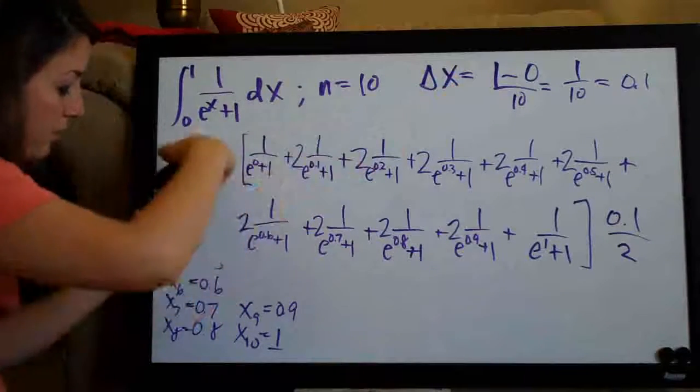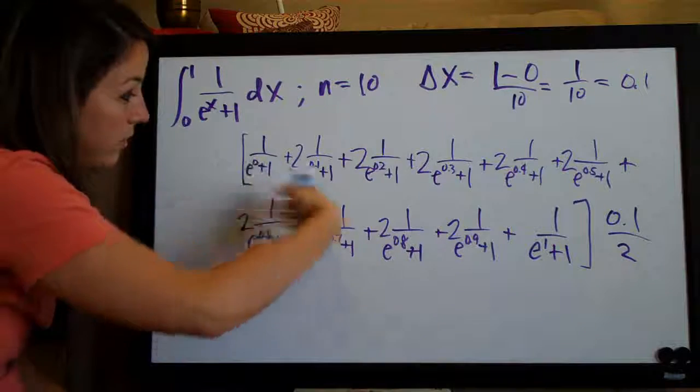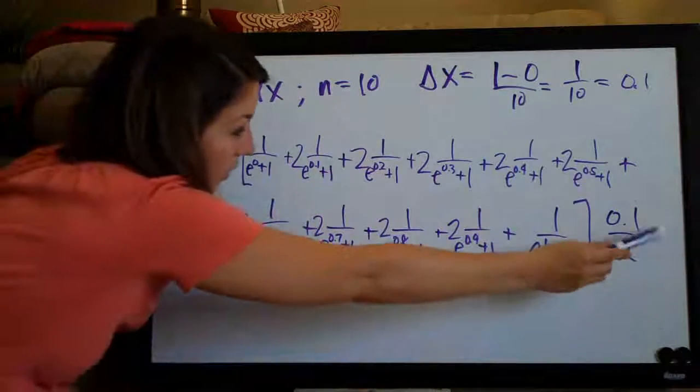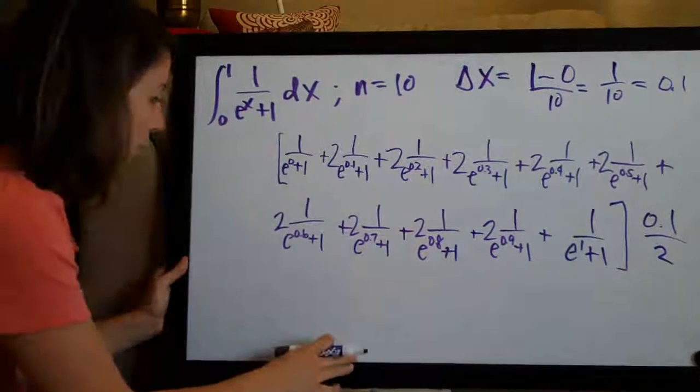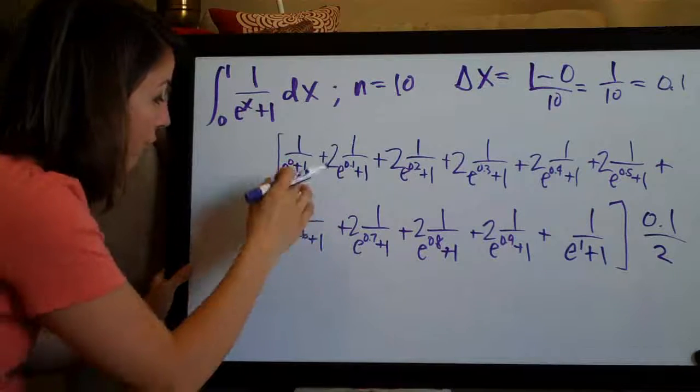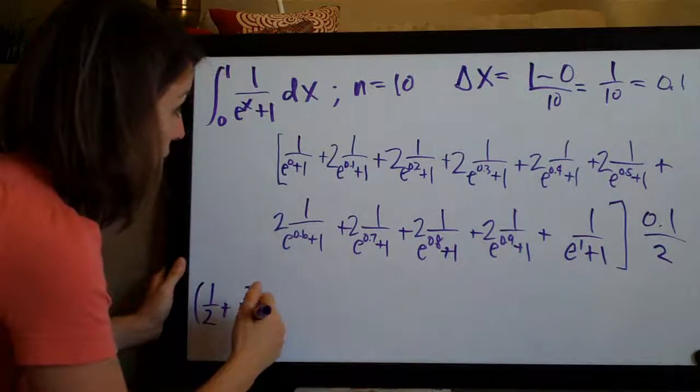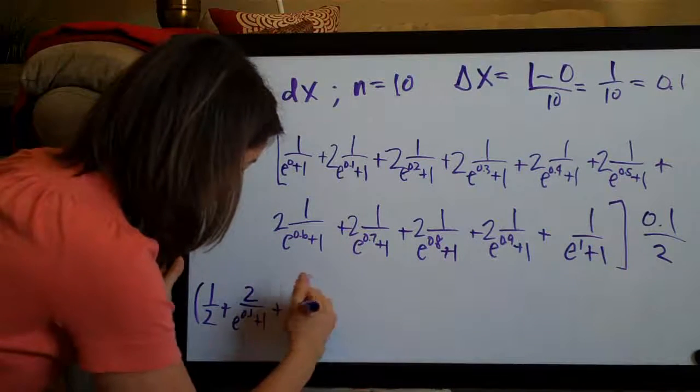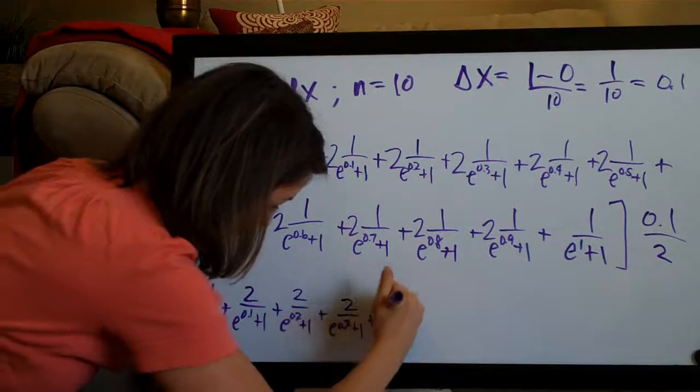You multiply that on the outside and that is the entire formula. So first step, find delta x. Second step, write out all of these x terms here. Third step, plug them all into your function and just add them all together. Multiply each term inside the brackets except the first one and the last one by two and then smack a delta x over two on the outside. And now all we need to do is simplify and then use a calculator to solve. We have e to the zero is one. Anything raised to the zero power is one. So one plus one is two. So the first term here is a one half.